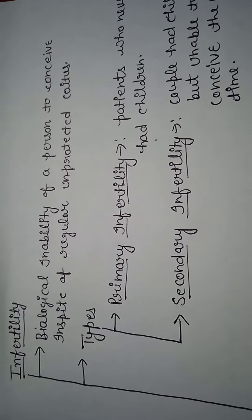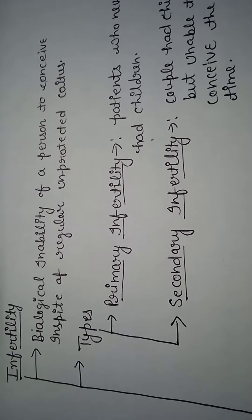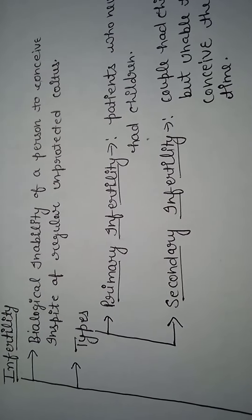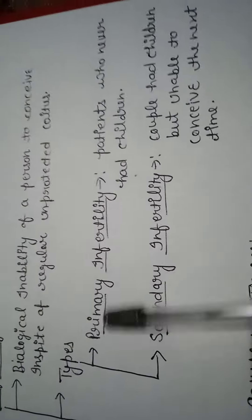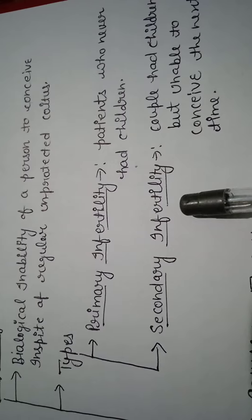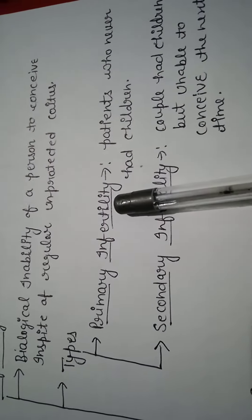So what happens in infertility? One person is not able to conceive with regular unprotected coitus. Now let's talk about types. There are two types: the first one is primary infertility and the second is secondary infertility.